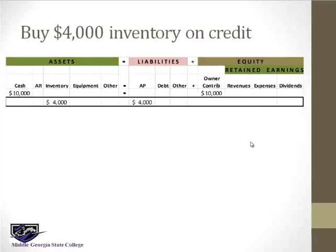Let's buy $4,000 of inventory on credit. On credit means you're not paying for it now — if you were paying now, it would say buy $4,000 inventory for cash, and we'd see cash going down and inventory going up. But buying on credit means the vendor gives us about 30 days to pay. So we have inventory going up and now we have a liability — we owe that vendor for the goods. Assets went up and liabilities went up; no change to equity. Our accounting equation is still in balance.